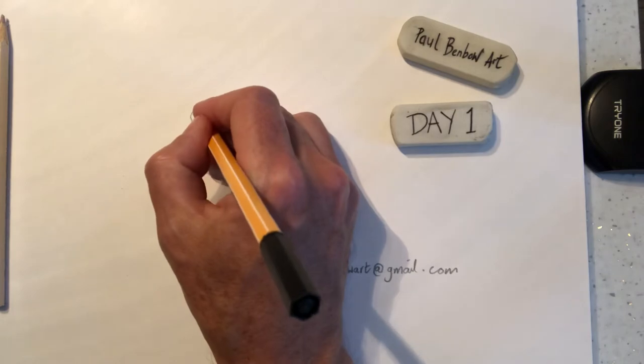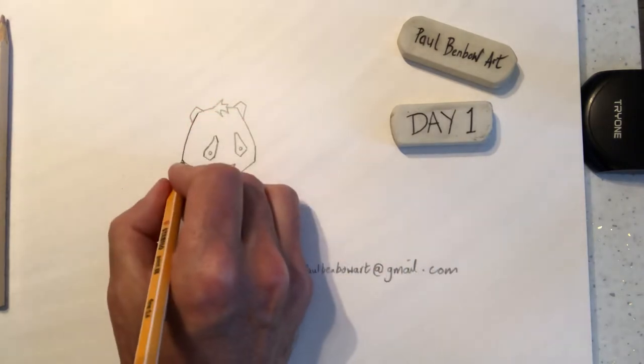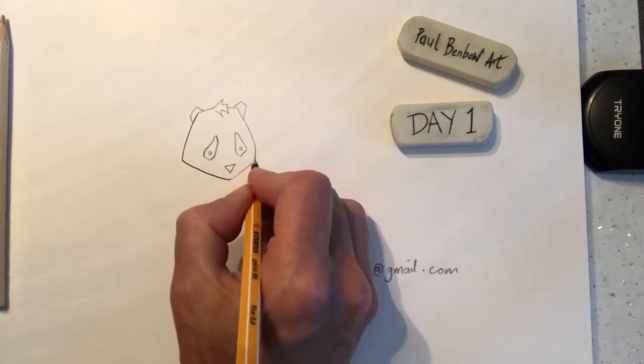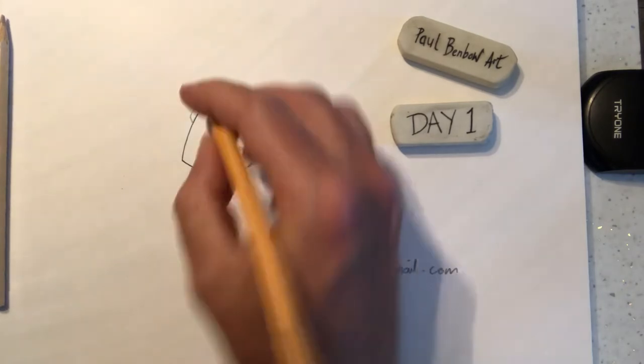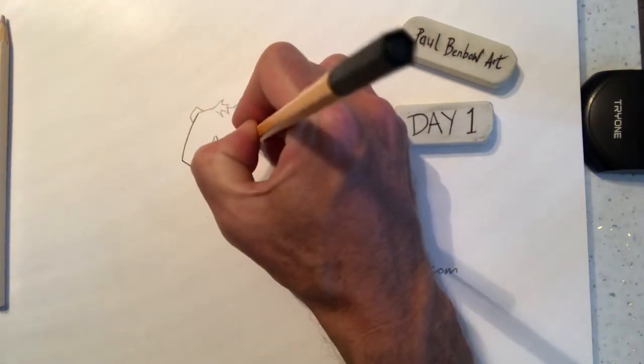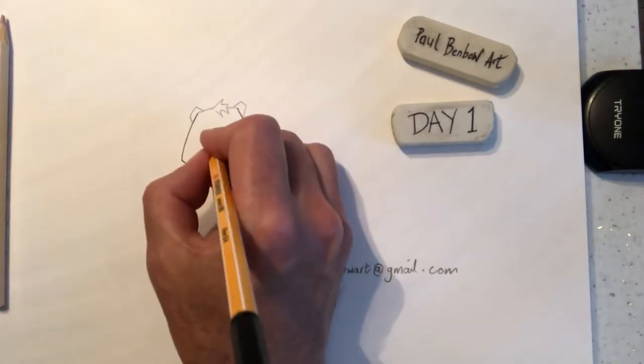That's all we're doing with the pencil. Now I'm just going to go to the fine liner. You guys, if you want to use felt tip, if you've got a black one, this will look most effective in black. I'm going to use a pencil crayon in a little while, and you can use the felt tip then if you wanted to.